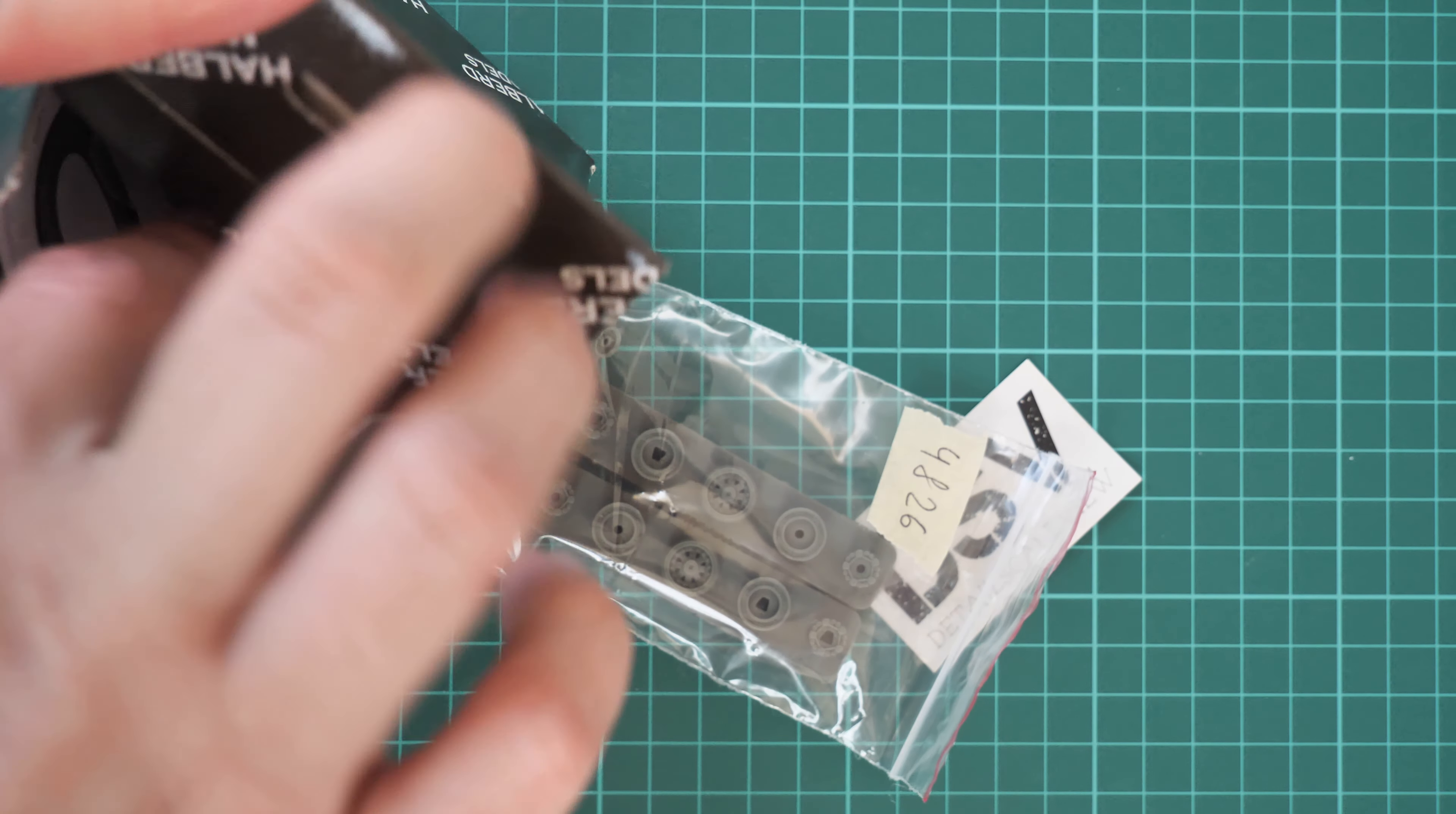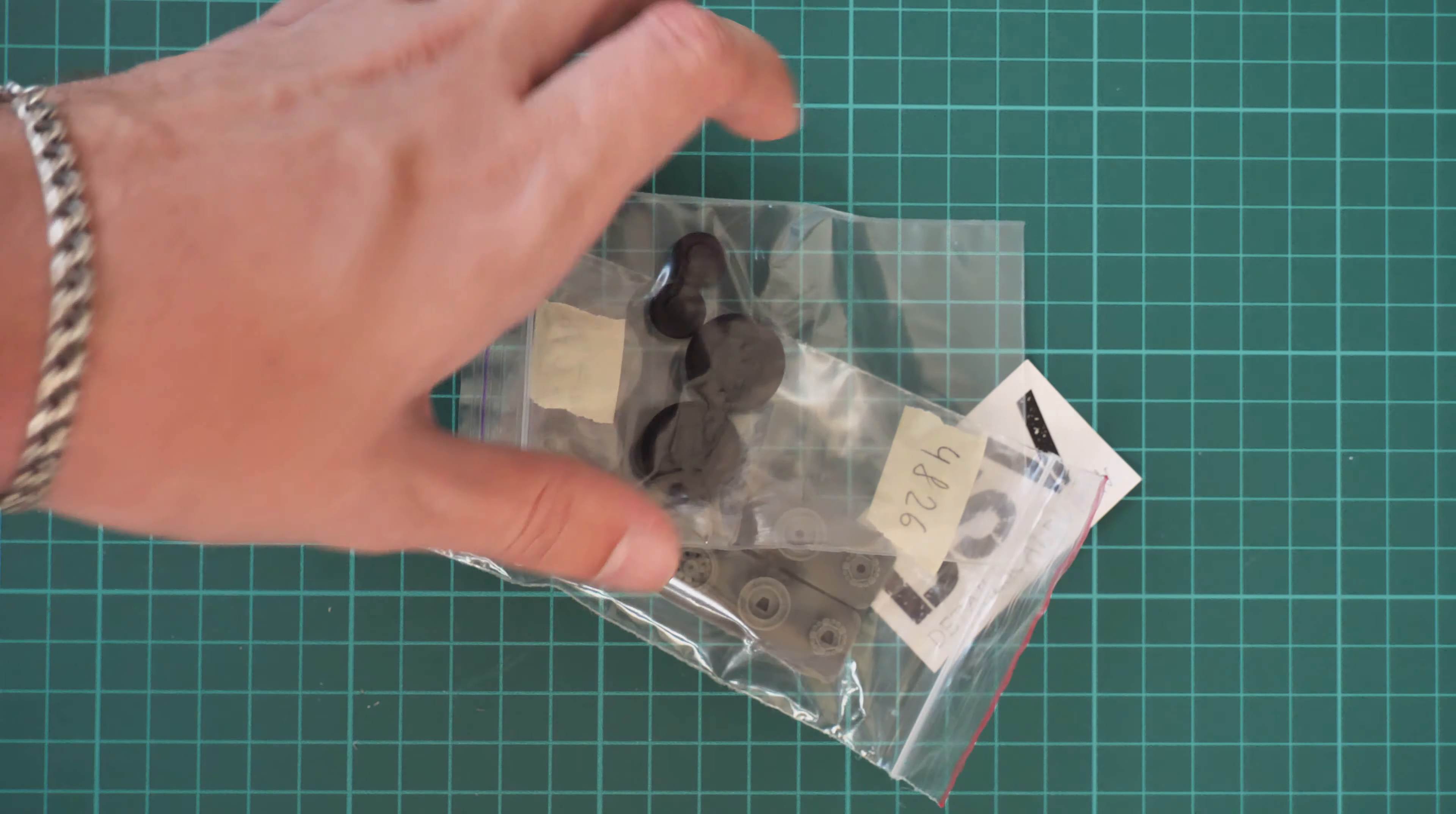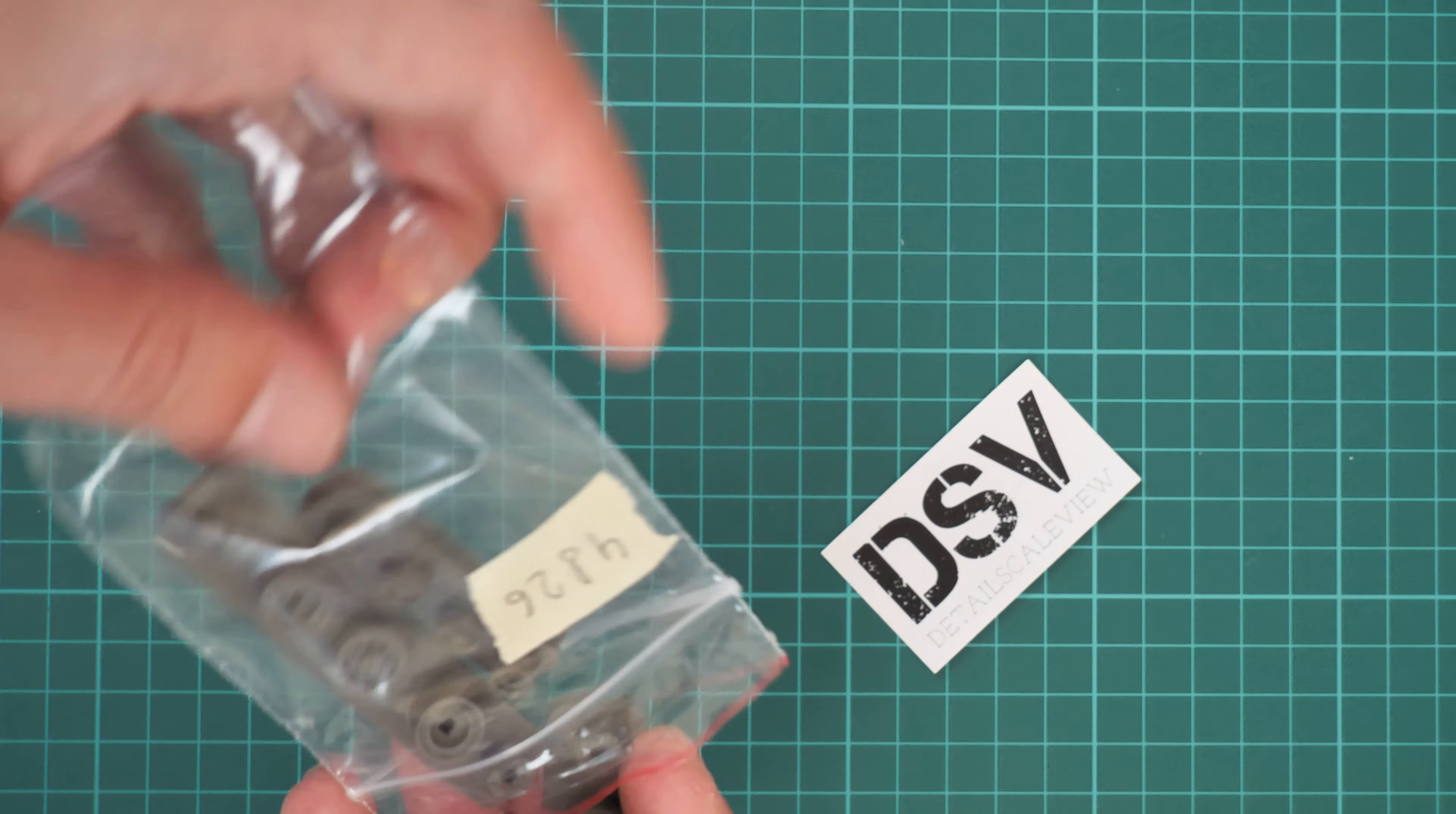So here first of all we have resin parts, then we have rubber, then we have the assembly manual. We're going to start with the resin parts, and as you can guess, resin parts feature wheel rims which will have to be used together with rubber tires.